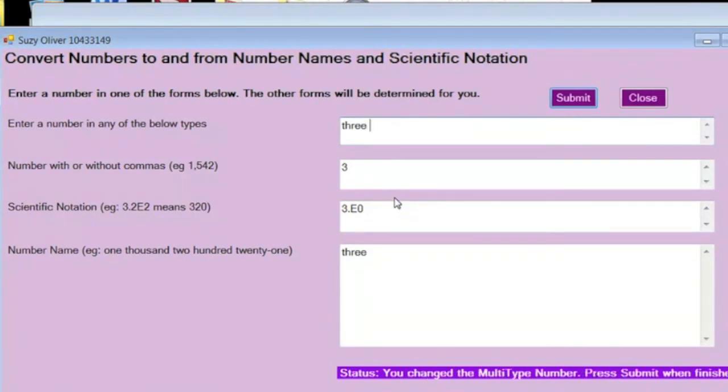However, if you had like 3,000, then the scientific notation is 3.0 e to the 3rd. So you've got 3, 3 zeros to the right of that 3, or 3 decimal places to the right of the 3.